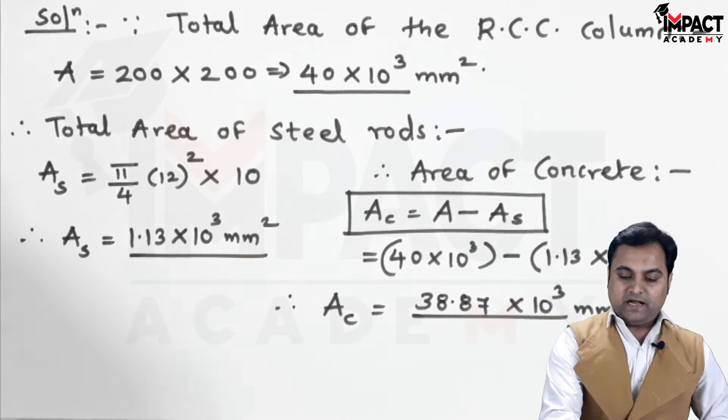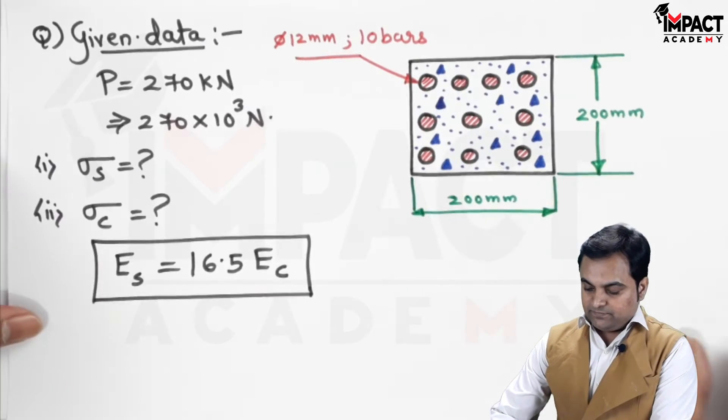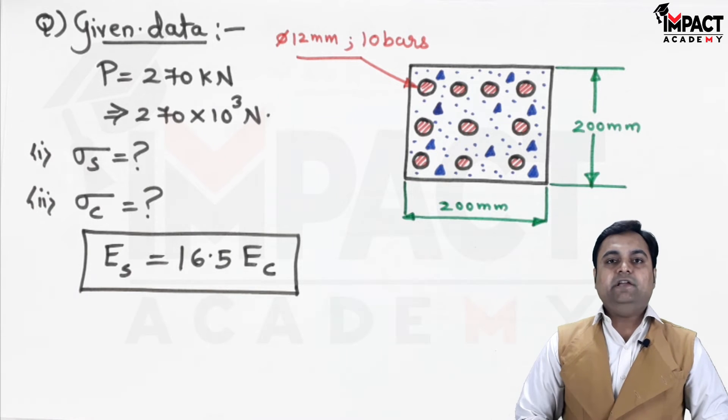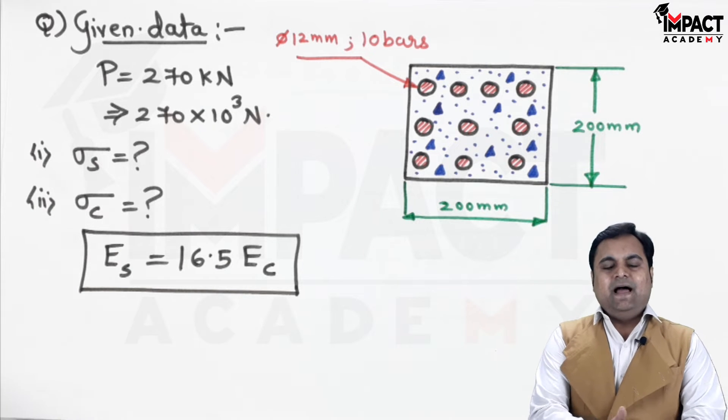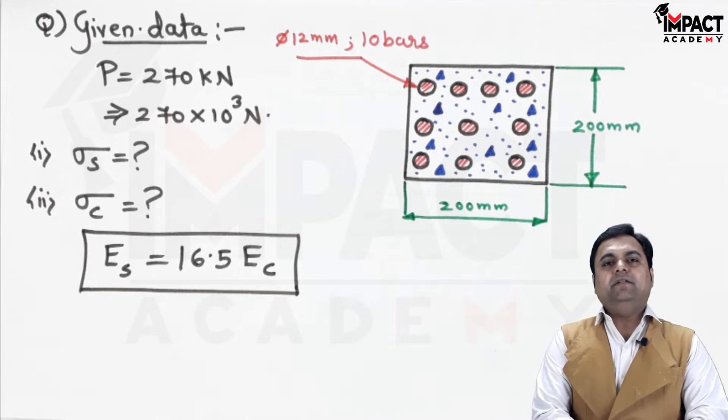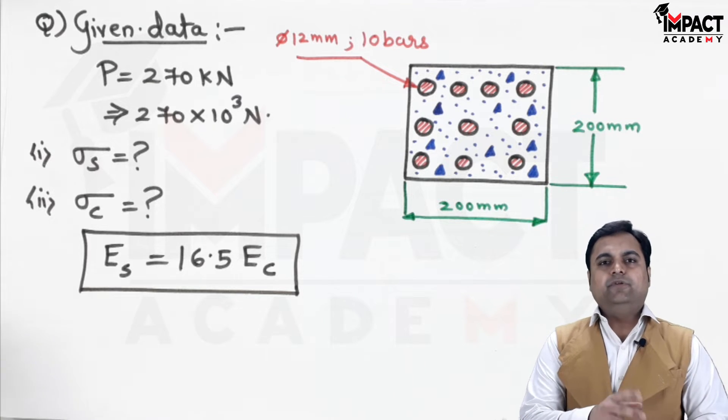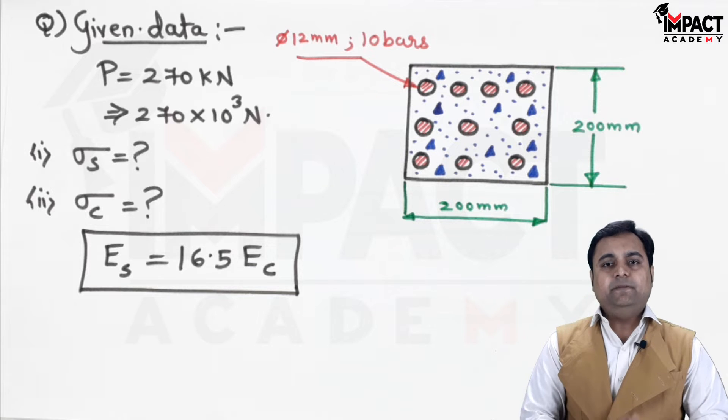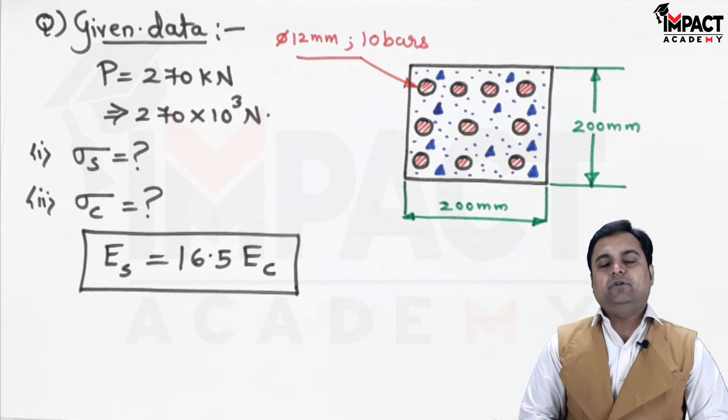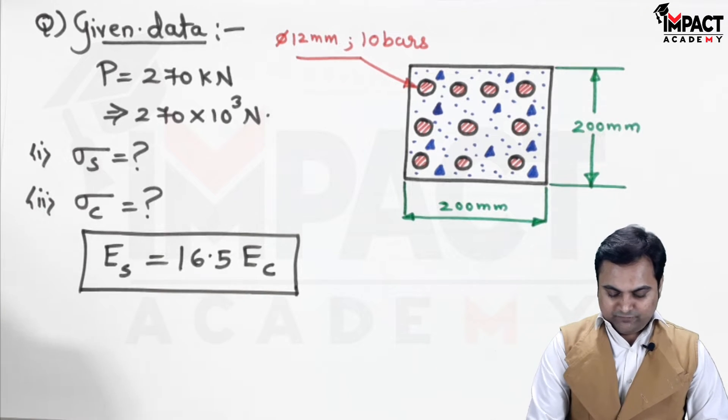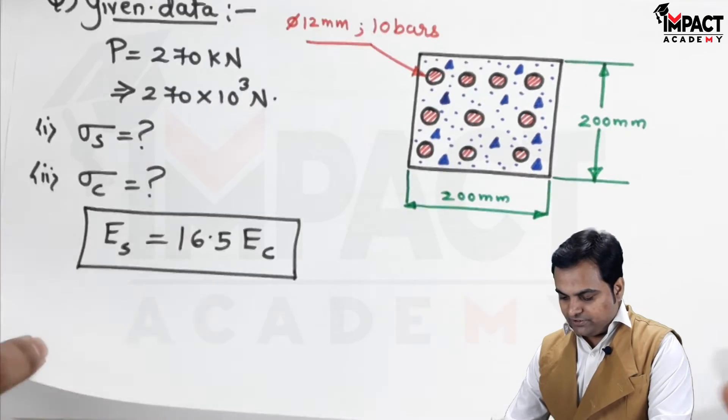Now, since this RCC column is subjected to a total load of 270 kilonewton, this load is shared by both the material. And, at the same time, the strain in both the materials would be same. Because, this case can be considered as two different materials which are joined together in parallel. So, the load is applied on the parallel configuration. And, because of that, there would be equal strain in both the materials. So, the first condition I am going to use here is: